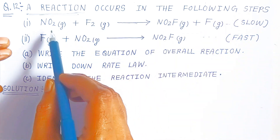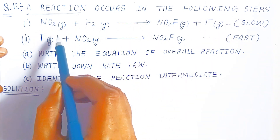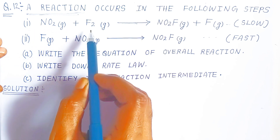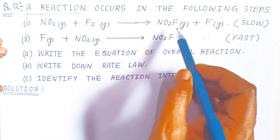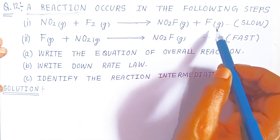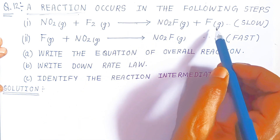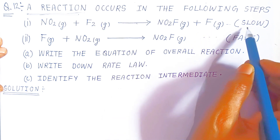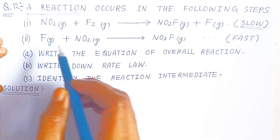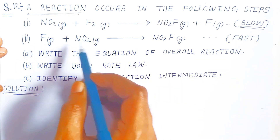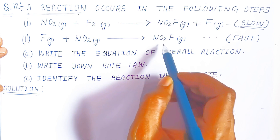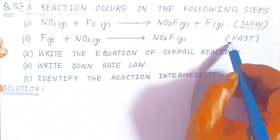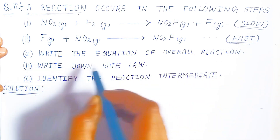In question 12, a reaction occurs in the following steps. In the first step, nitrogen dioxide gas combines with fluorine gas to form nitryl fluoride and fluorine gas. This is a very slow process. In the second step, fluorine reacts with nitrogen dioxide gas to form nitryl fluoride gas, and this reaction is very fast.